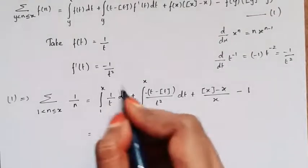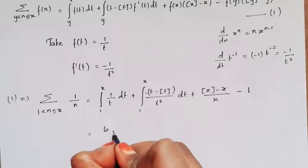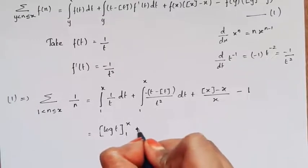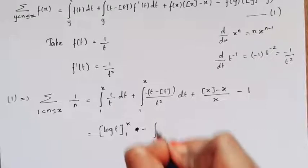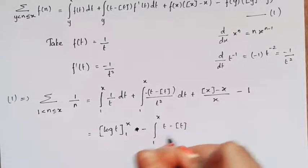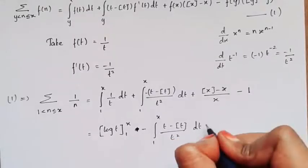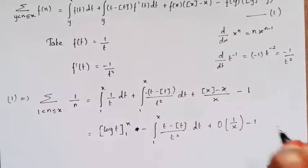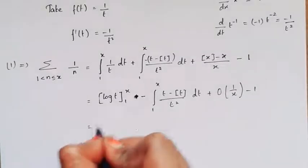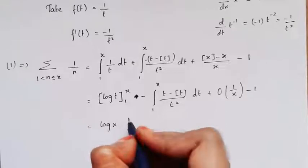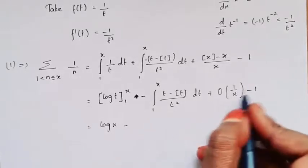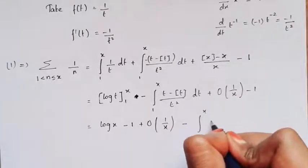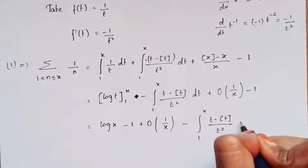Integrating the first term we get log t evaluated from 1 to x, that is log x. The second integral term becomes minus the integral from 1 to x of (t minus floor(t)) divided by t squared dt. The boundary term with floor(x) minus x is written as big O of 1 by x minus 1. Applying the limit: log x minus log 1 (which is 0) minus 1, plus big O of 1 by x, minus the integral from 1 to x of (t minus floor(t)) divided by t squared dt.